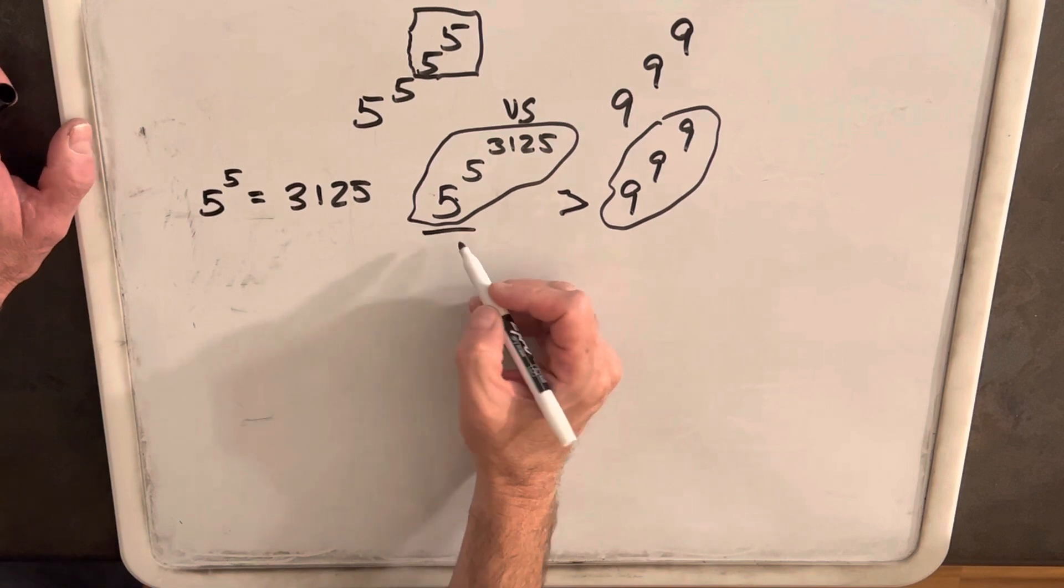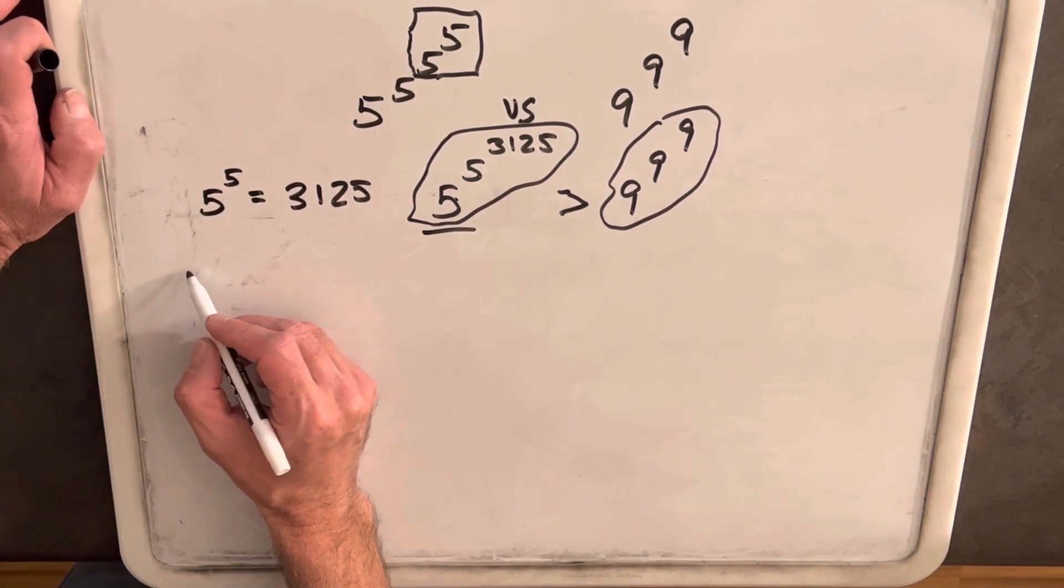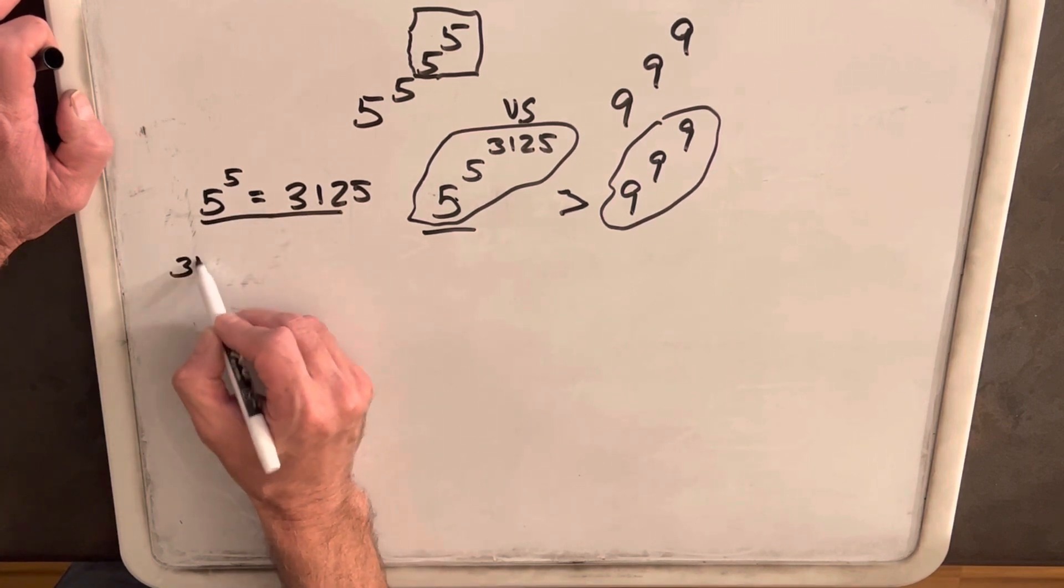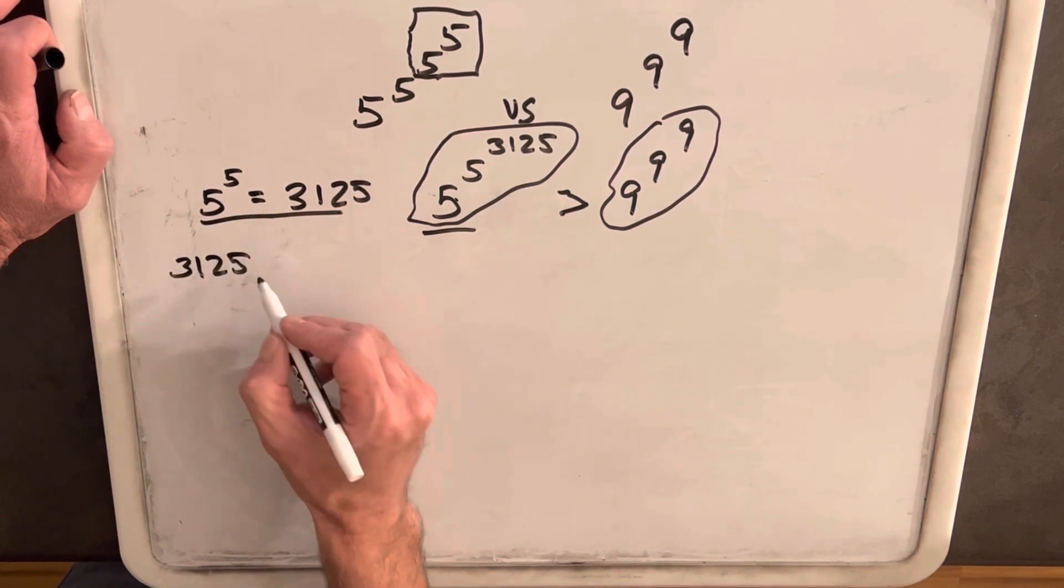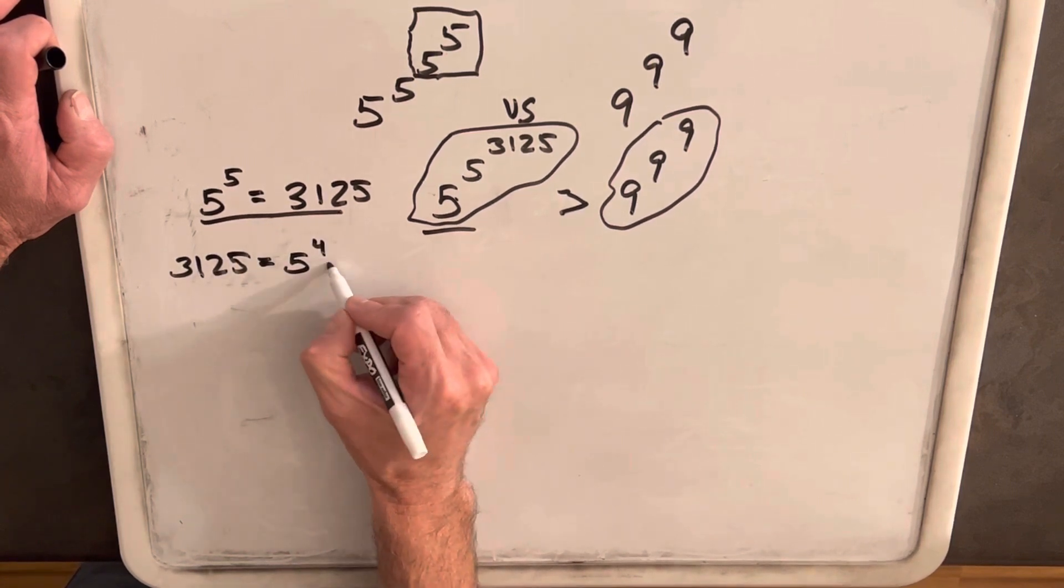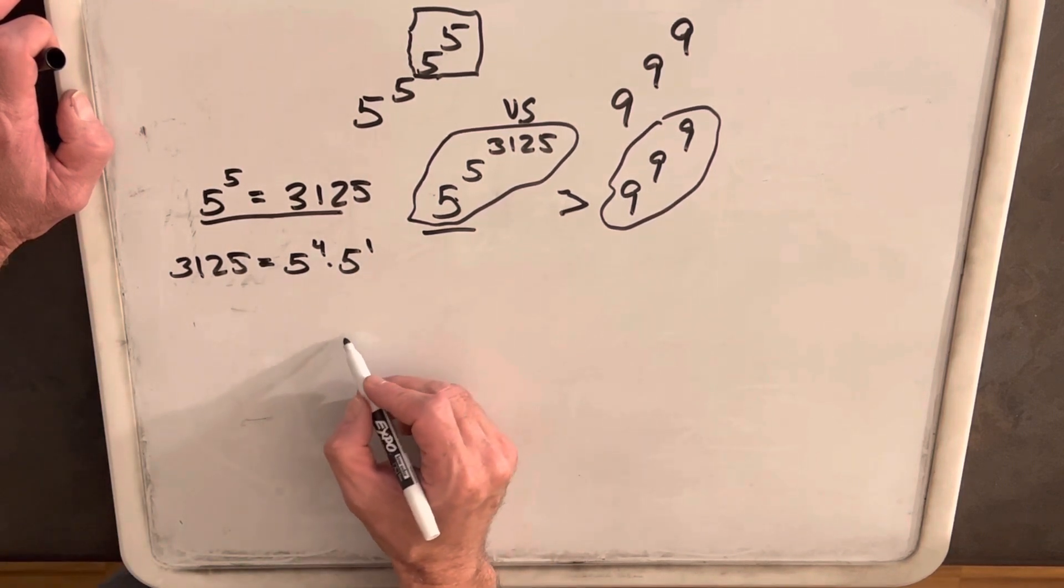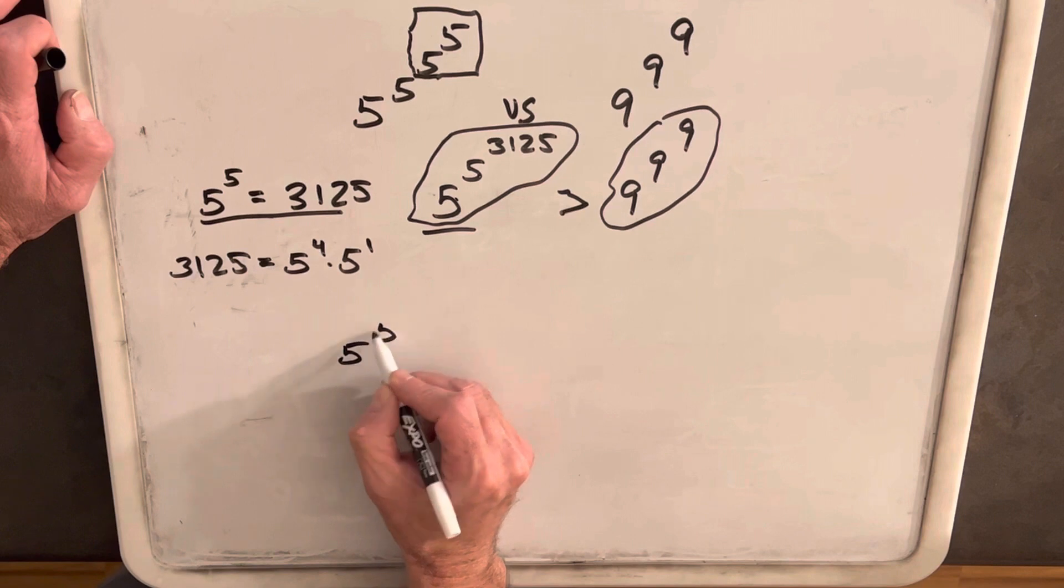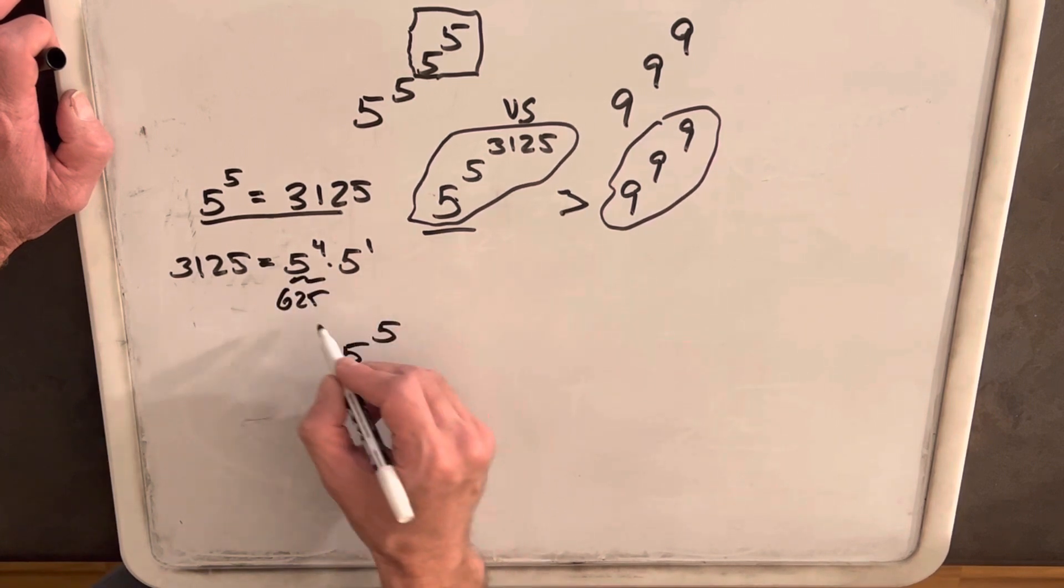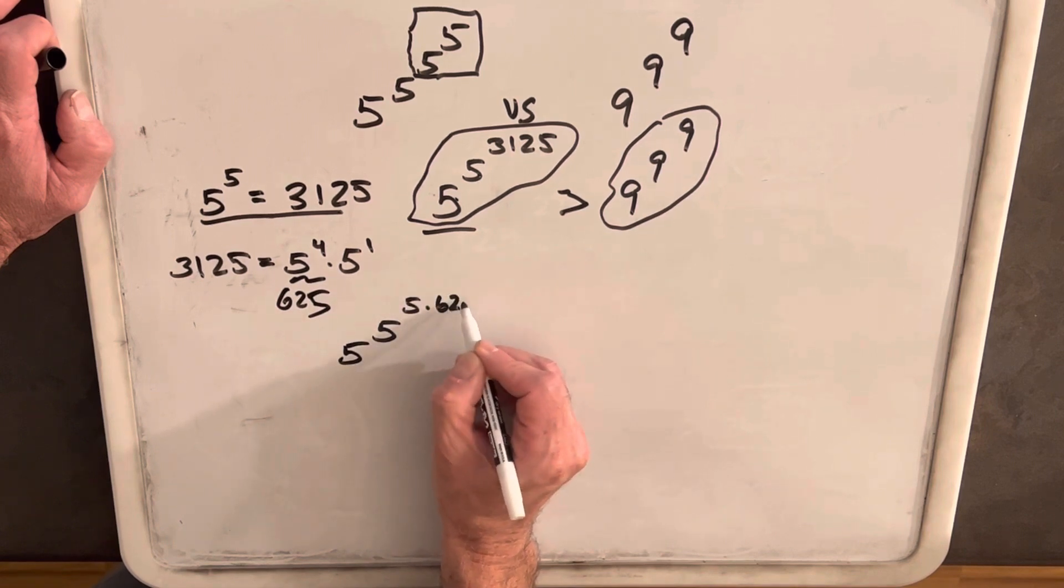Next, what I'm going to do is keep working with this left side. Let's also notice that 3,125 is 5 to the 5. And then we can actually break that up like this. And so we can rewrite this as 5 to the 5. This is 625. So we can write this as 5 times 625.